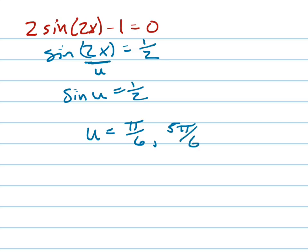But I'm not trying to solve for u, I'm trying to solve for x. And what was u? U was 2x. So 2x equals pi over 6 and 2x equals 5 pi over 6. So what is x equal? x equals pi over 12 and x equals 5 pi over 12.